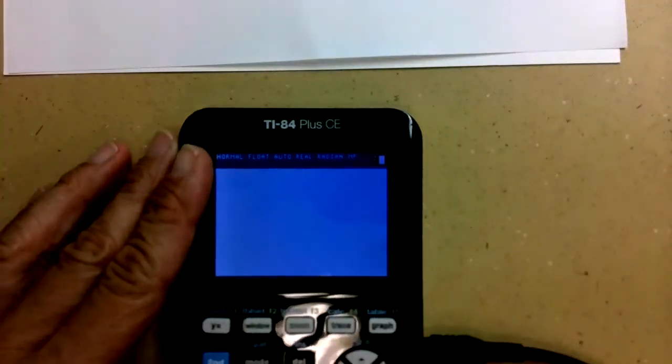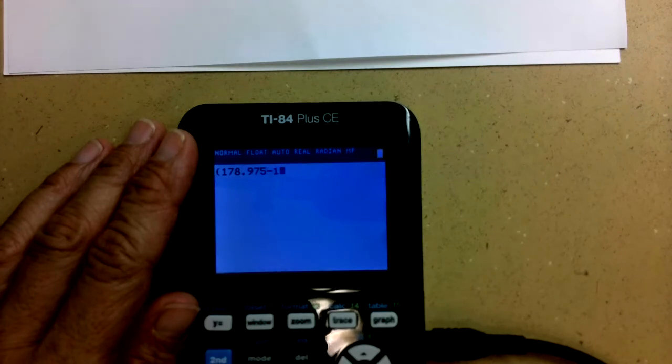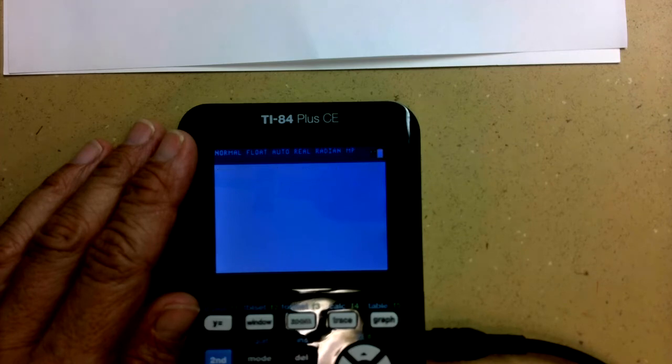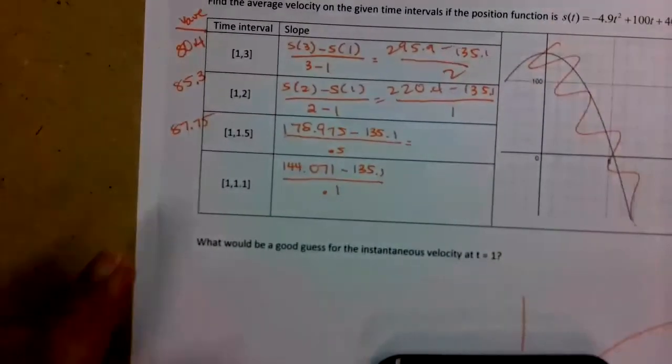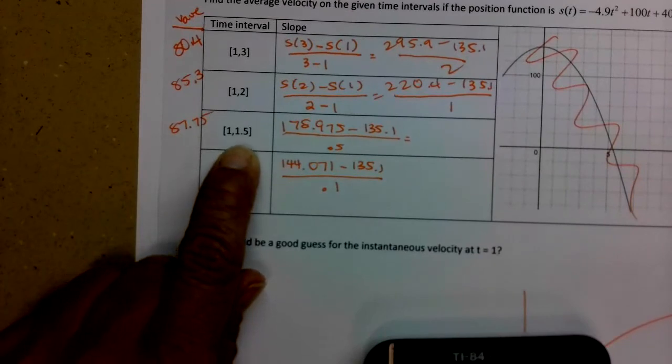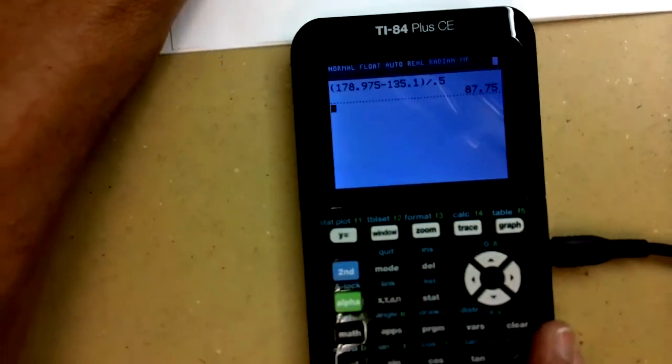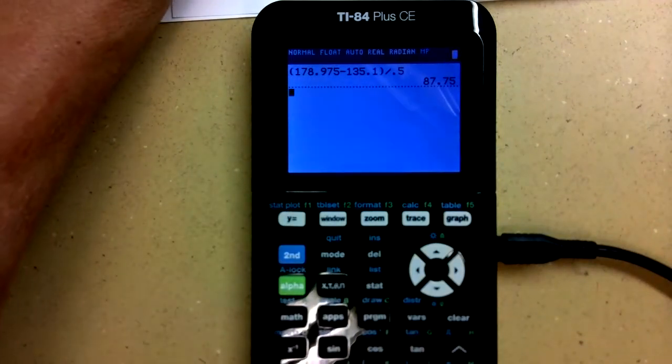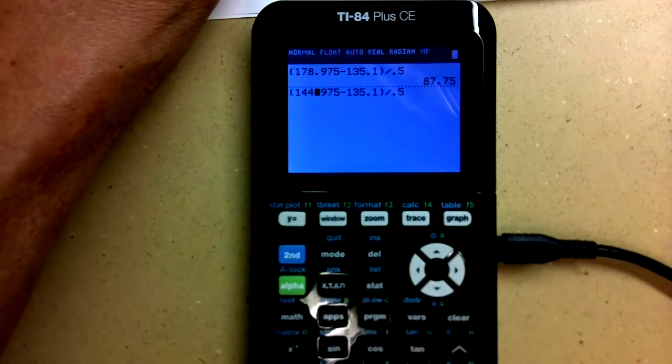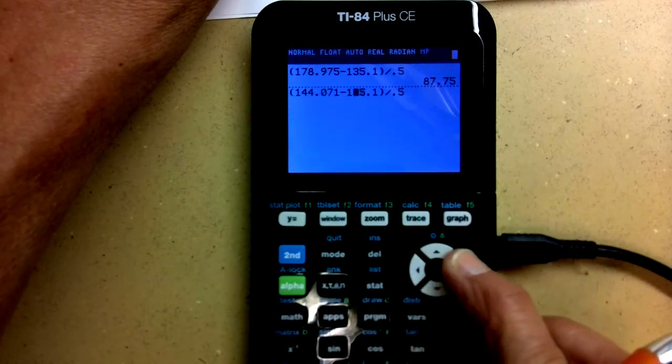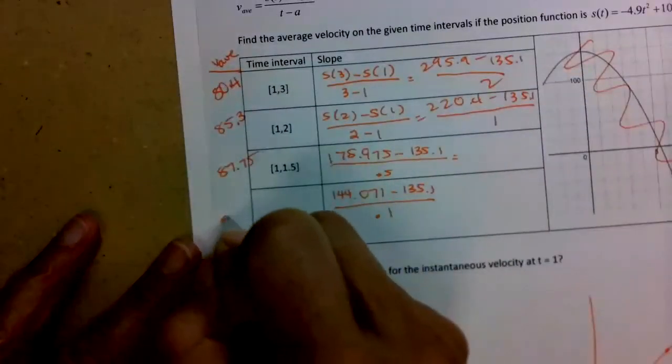So I'll move that so you guys can see my calculating screen. So I want to do 178.975 minus 135.1 divided by 0.5, 87.75, right, for the average velocity between 1 and 1.5. Let's see what that next one's going to do for us. So I'm dividing by 0.1. I just need to change a couple of numbers in there. 144.071 divided by 0.1, 89.71.